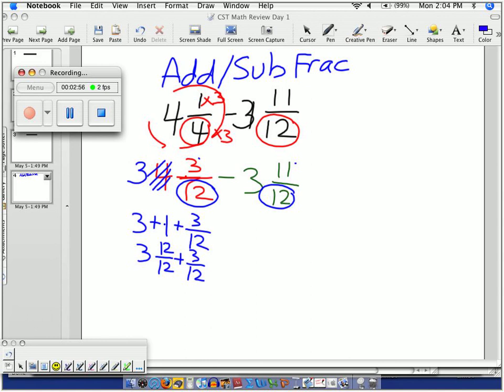So now this makes 3 and 15 twelves. Or what I can do is share with you that you can do an improper fraction. 12 times 1 is 12, 12 plus 3 is 15.